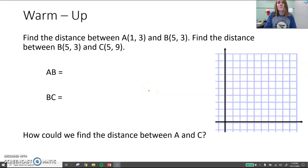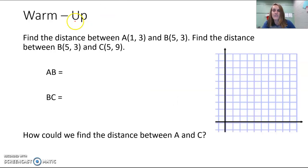Find the distance between A(1,3) and B(5,3). Find the distance between B(5,3) and C(5,9). So we're finding the lengths of those two segments, basically AB and BC. That's what we have identified down here. So I'm going to graph in order to do that. There's this coordinate plane here.